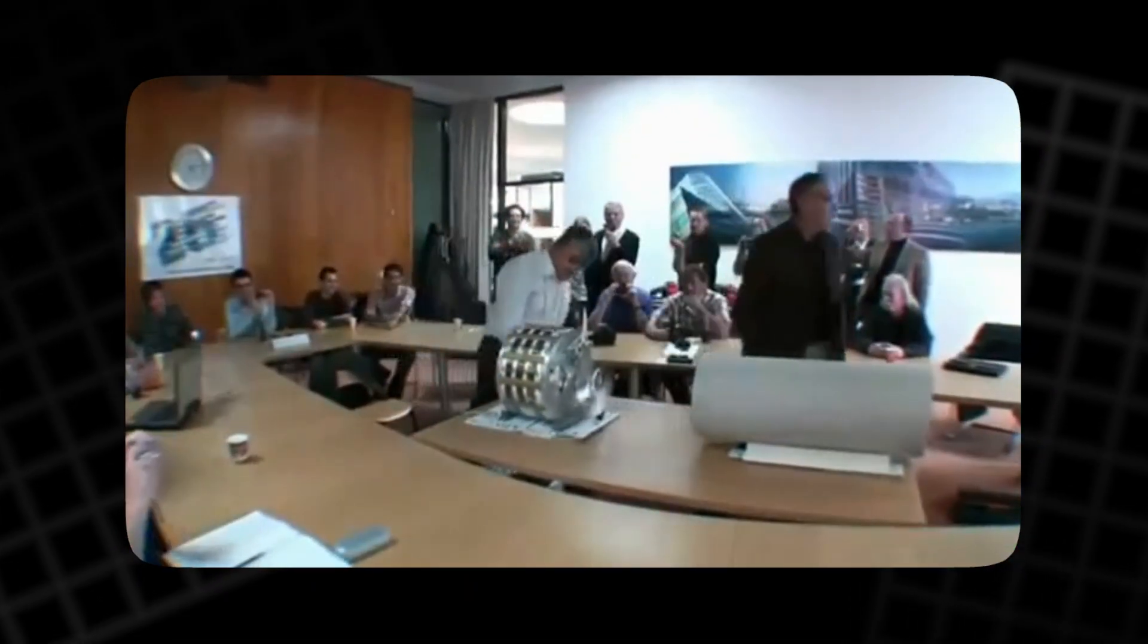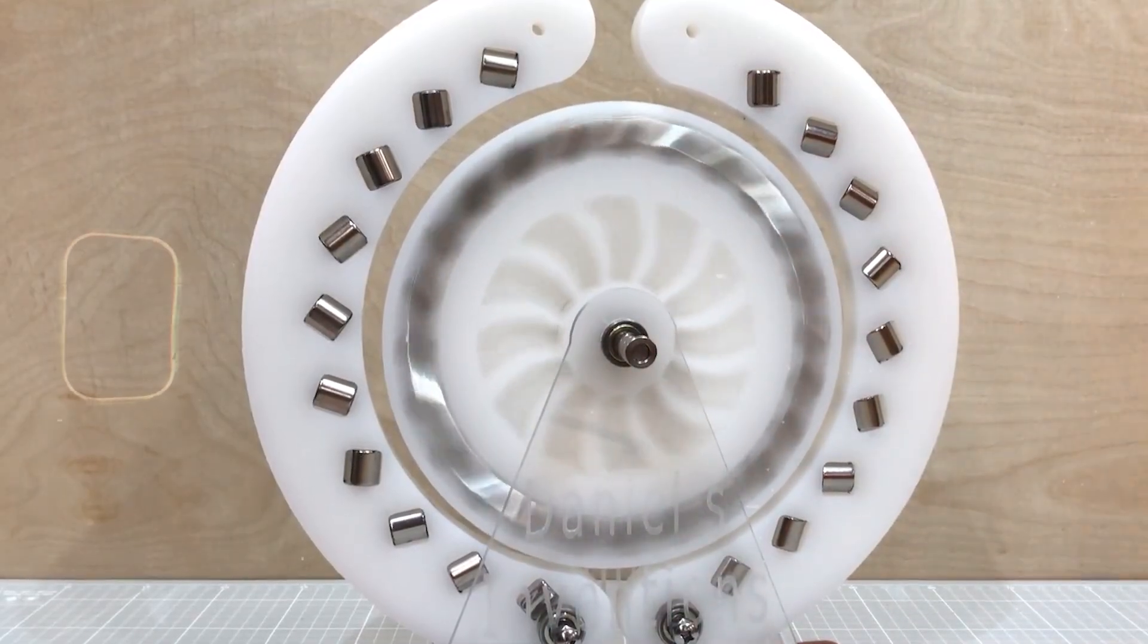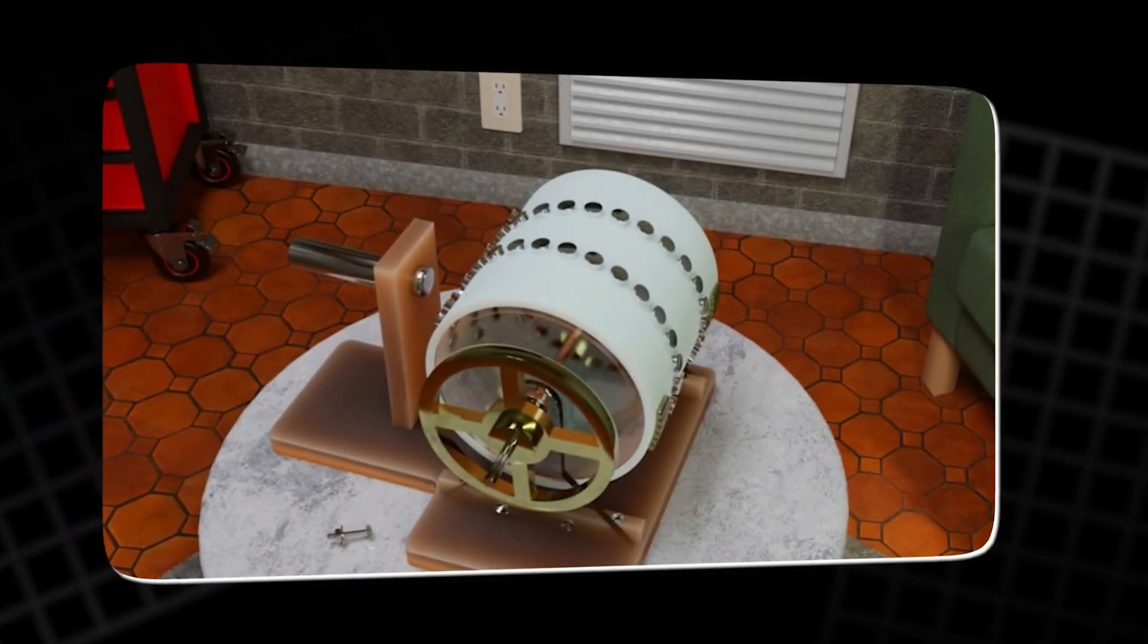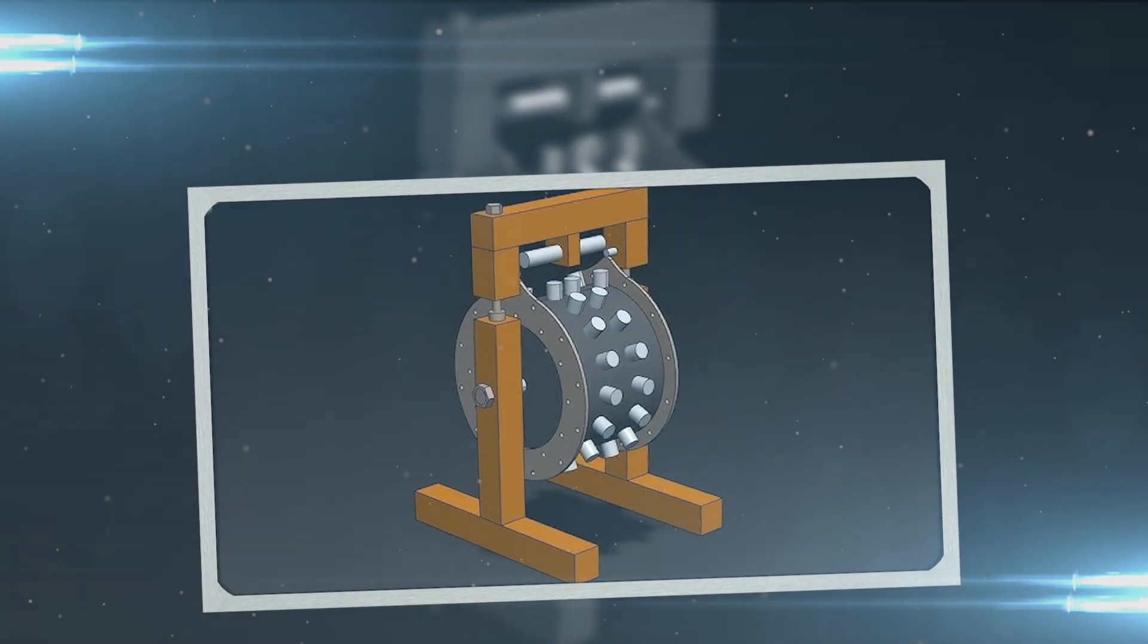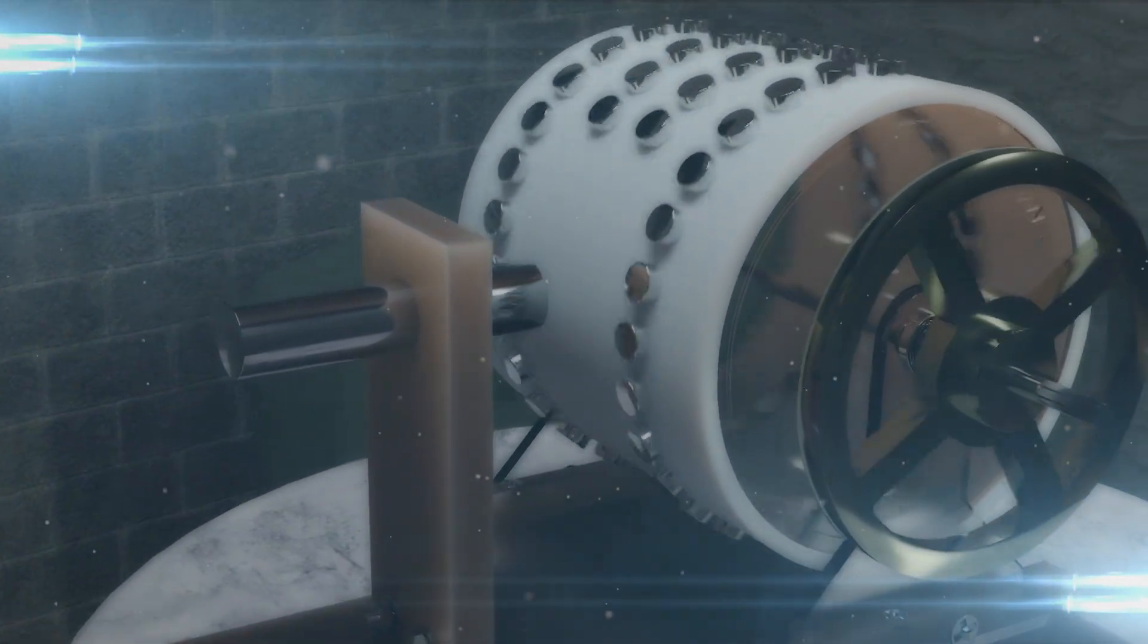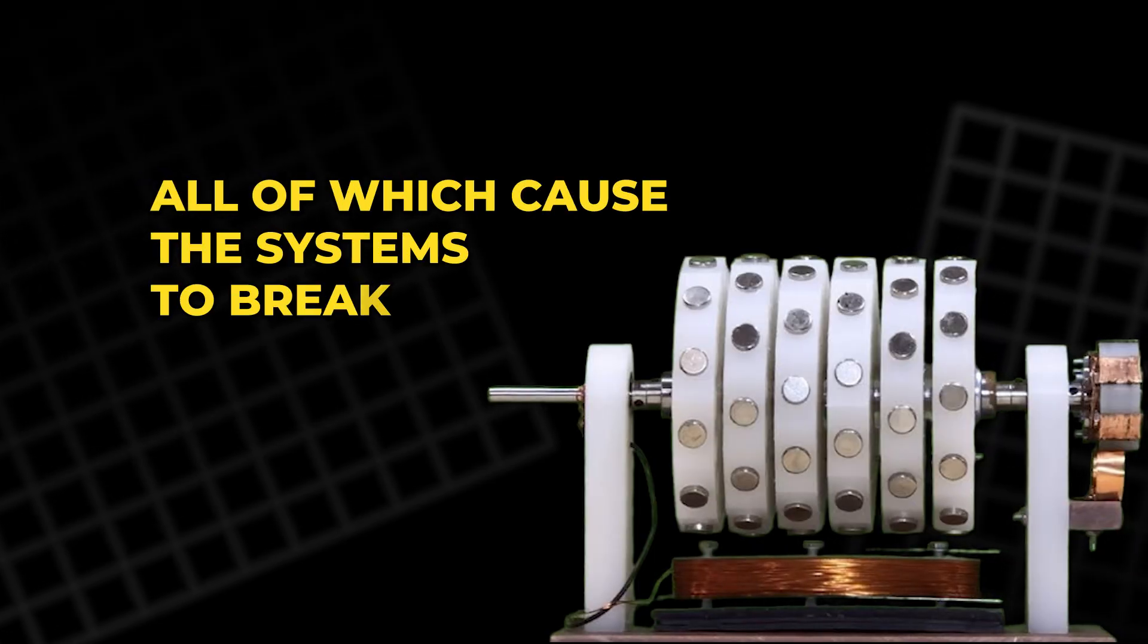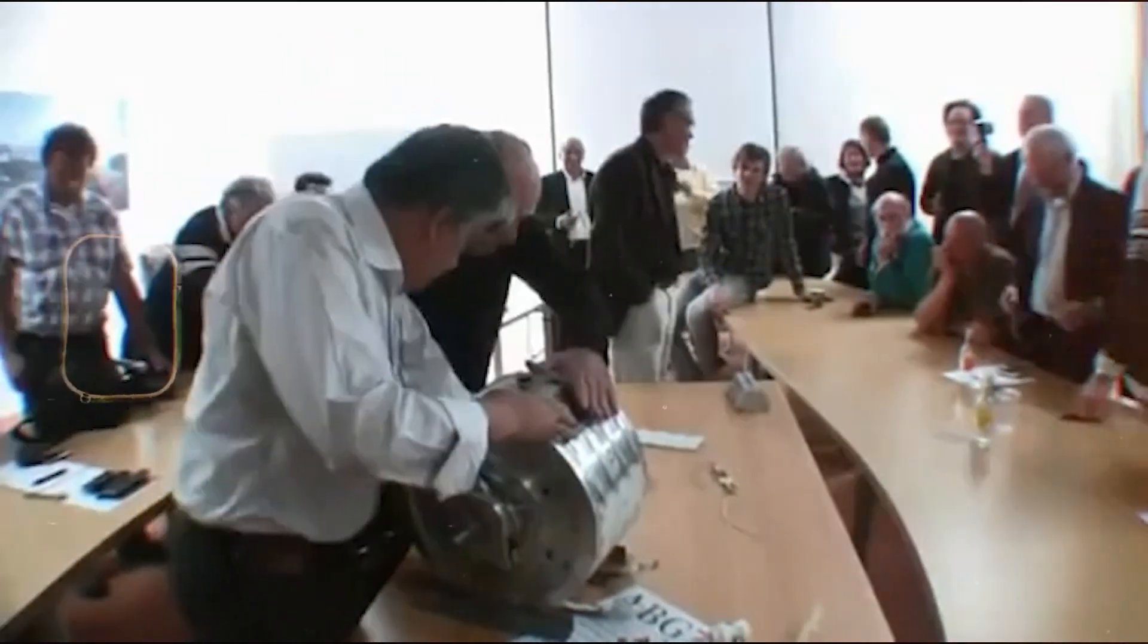Many of the magnet motors presented to the public fail to hold up under scrutiny. Some have been found to have hidden power sources, such as batteries or electrical connections, which undermine their claims of being free energy devices. Others simply don't work as advertised, either because of flaws in design, or because they can't produce more energy than they consume. Additionally, magnet motors often suffer from practical issues like friction, heat build-up, and magnetic interference, all of which cause the systems to break down over time.